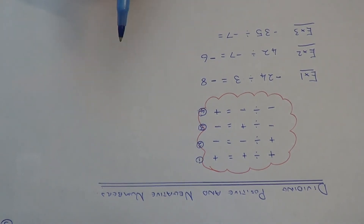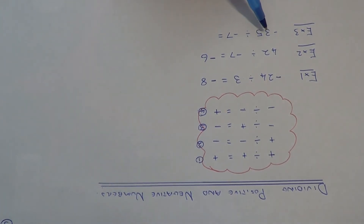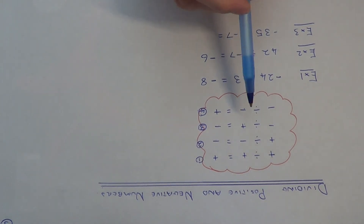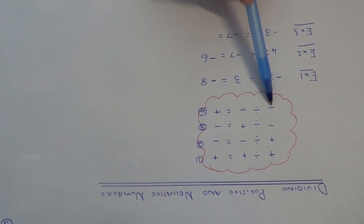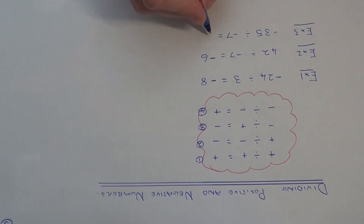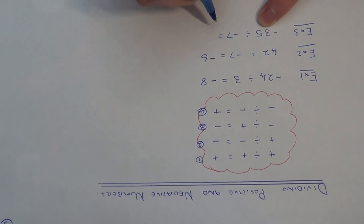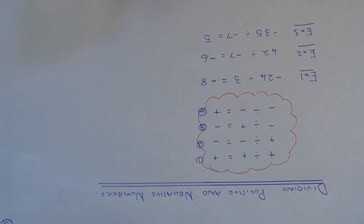Let's do our final example, example 3. This time we've got minus 35 divided by minus 7. Here we've got two negatives being divided, so this is our fourth rule: two negatives divided will give a positive answer. So we know our answer is going to be positive — you don't need to put the plus sign there. 35 divided by 7 is 5, so that's our final answer.